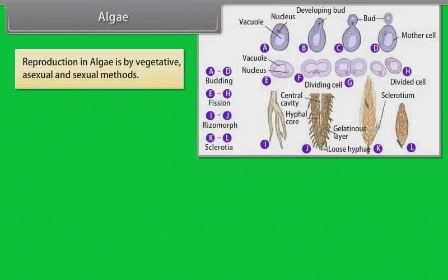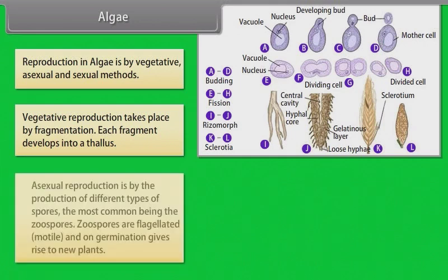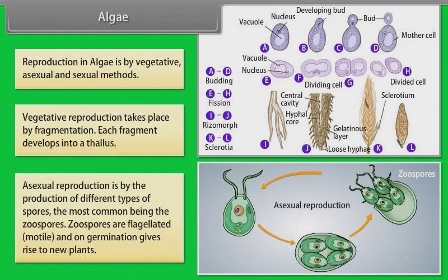Reproduction in algae is by vegetative, asexual and sexual methods. Vegetative reproduction takes place by fragmentation. Each fragment develops into a thallus. Asexual reproduction is by the production of different types of spores. The most common being the zoospores. Zoospores are flagellated, motile and on germination gives rise to new plants.